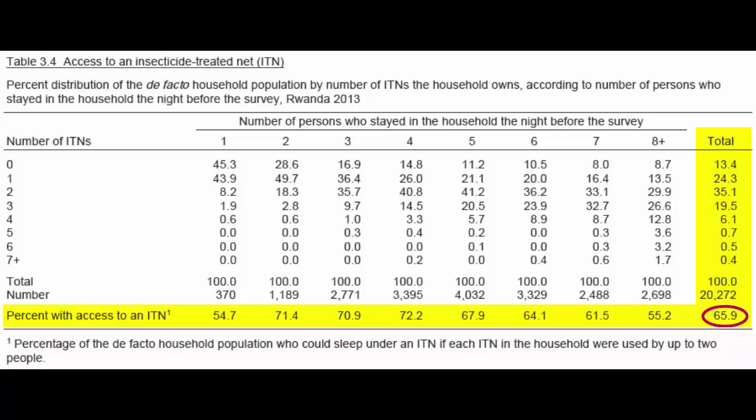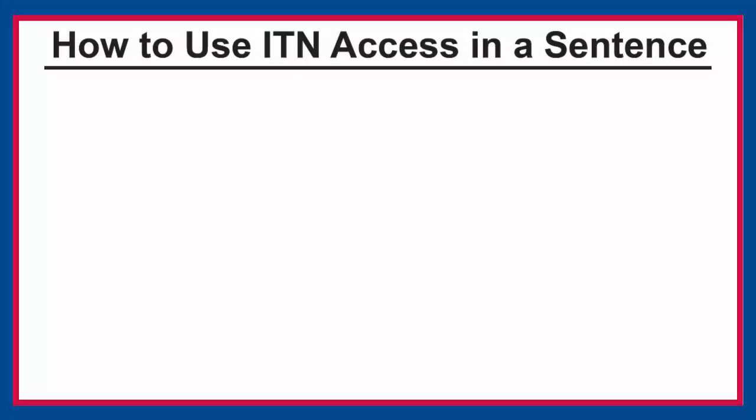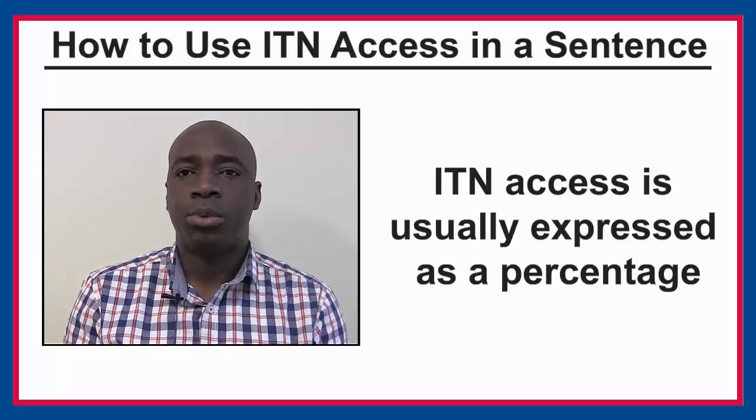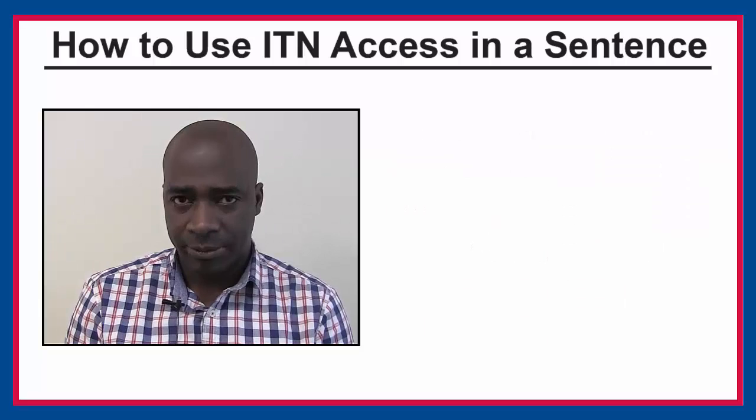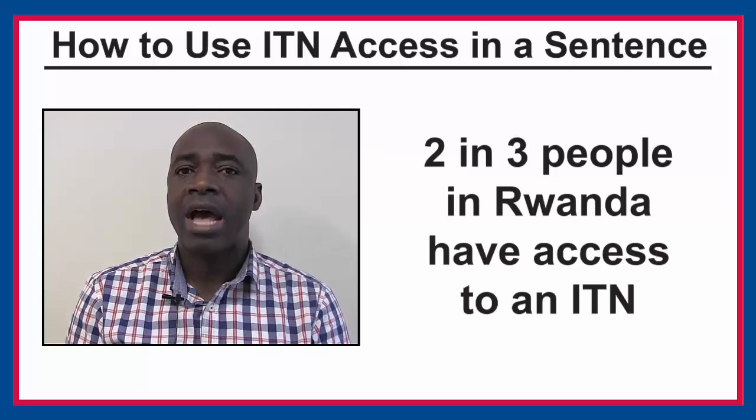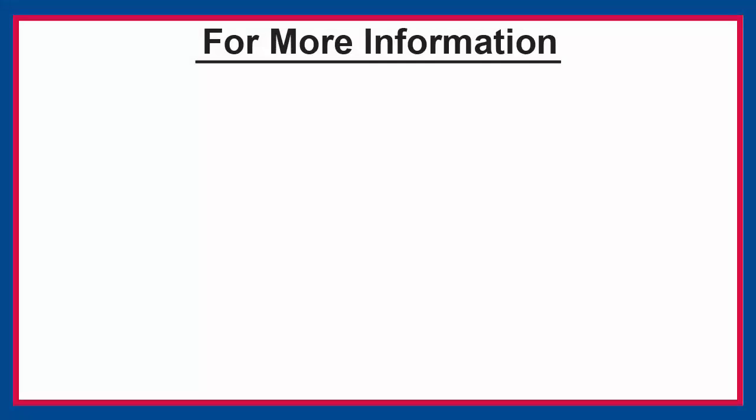How to use ITN access in a sentence? ITN access is usually expressed as a percentage. You could say '66% of Rwandans could sleep under an ITN if every ITN in the household were used by two people.' Or you could say 'Two in three people in Rwanda have access to an ITN.' For more information about ITN access, visit our website or the user forum.